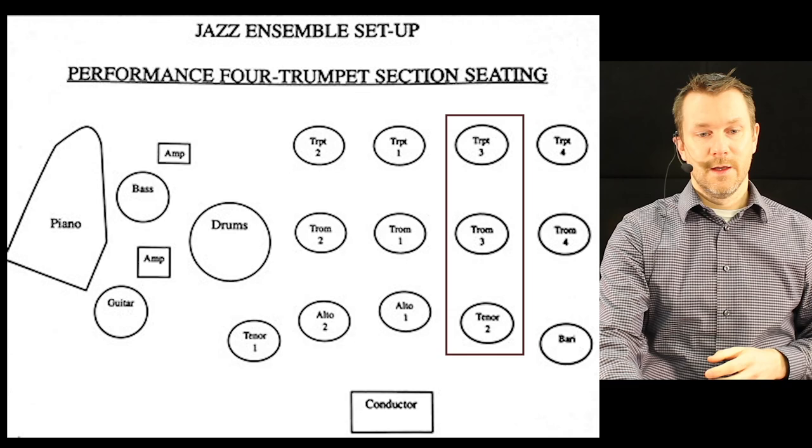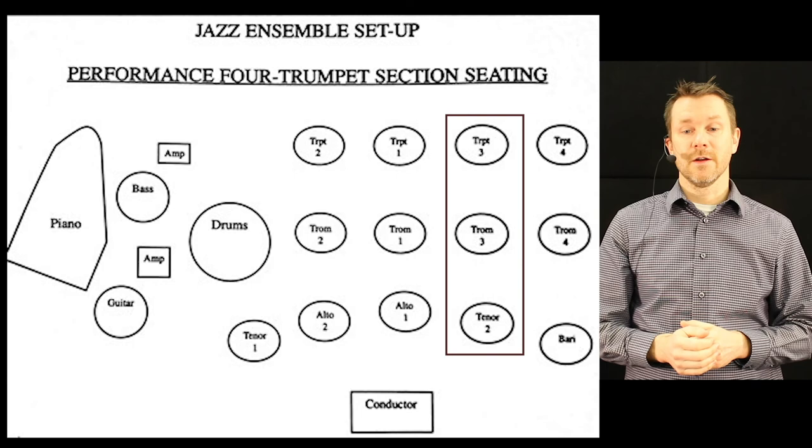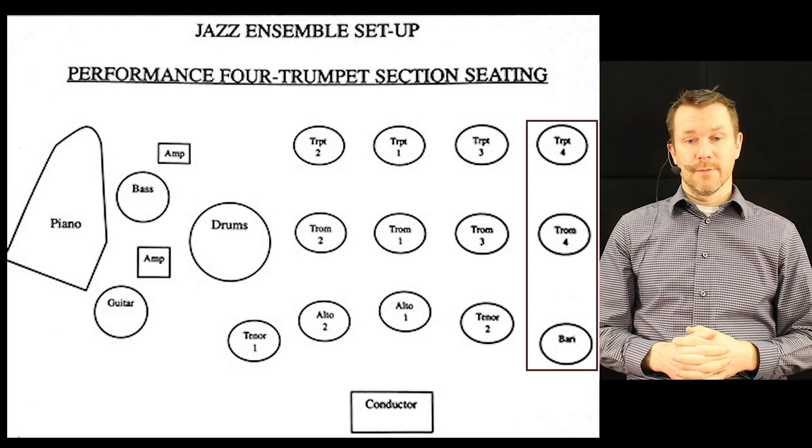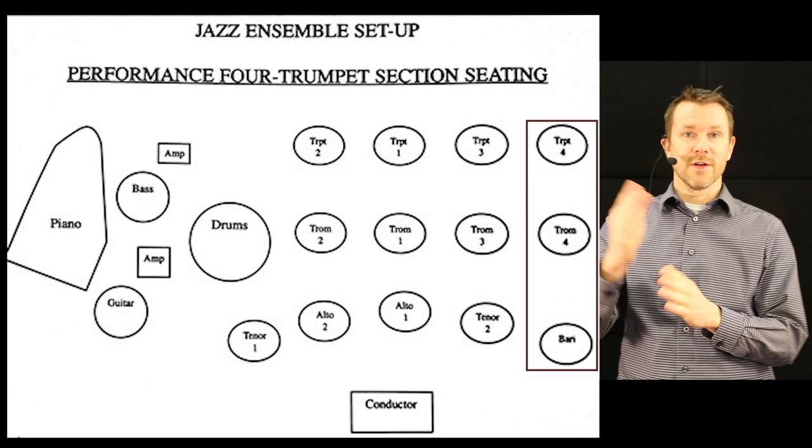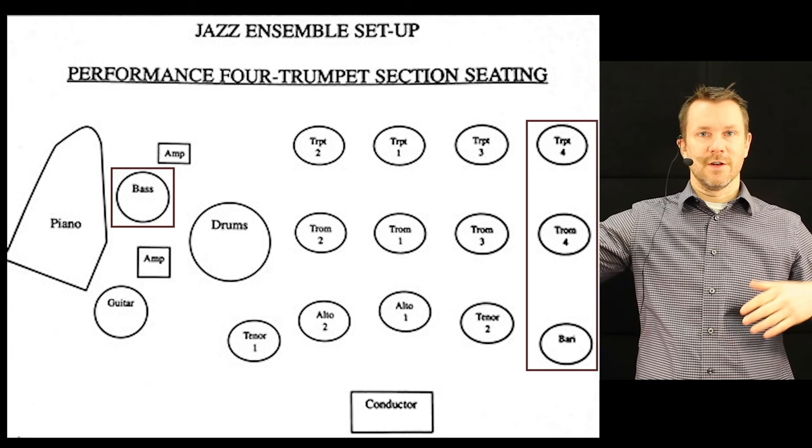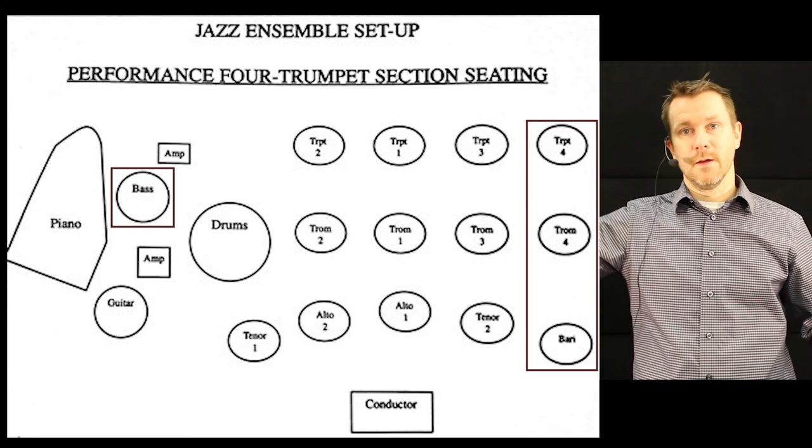Second tenor is lined up with trumpet three and trombone three, playing the lower inner voices in their sections. Baritone saxophone is lined up with the bass trombone, and they often have parts together. They're also on the other side of the band from the actual bass, and it becomes like having subwoofers on each side of the band, with bass sounds coming from both sides.